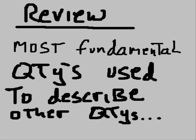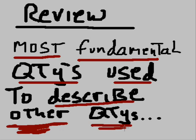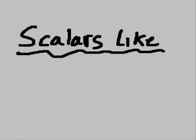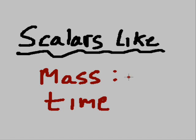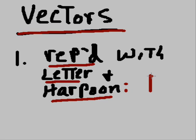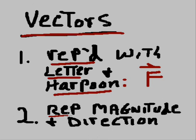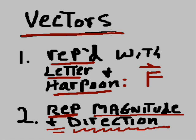So a little bit of a review. The most fundamental quantities used to describe other quantities in statics are scalars — like mass and time — represented by lowercase m and lowercase t. And then there are vectors, represented with a letter and a harpoon. Vectors represent both magnitude and direction.